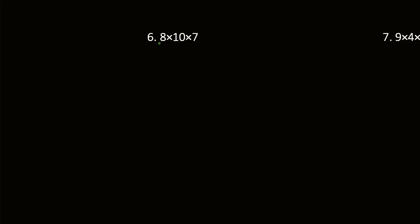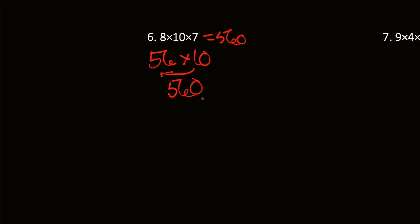Here we have 8 times 10 times 7. We can group 8 and 7 because 8 times 7 is 56. And whenever you multiply by 10, it's basically just adding a 0, so that gives us 560. If you did the associative property with 8 times 10 and then times 7, you would still get 560.